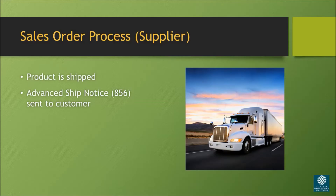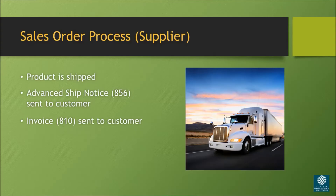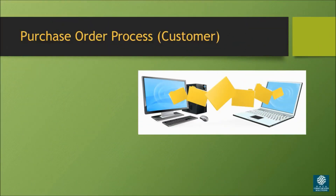It's essential that the customer receives the shipment notice before the truck arrives. Once the truck is on its way, the ERP generates an invoice, also known as an 810, which is then sent to the customer to request payment. This completes the sales order process.